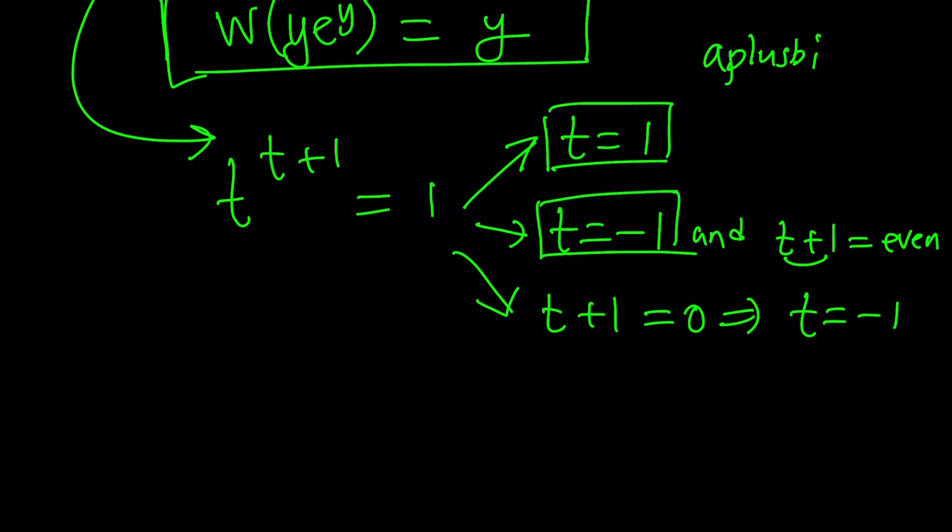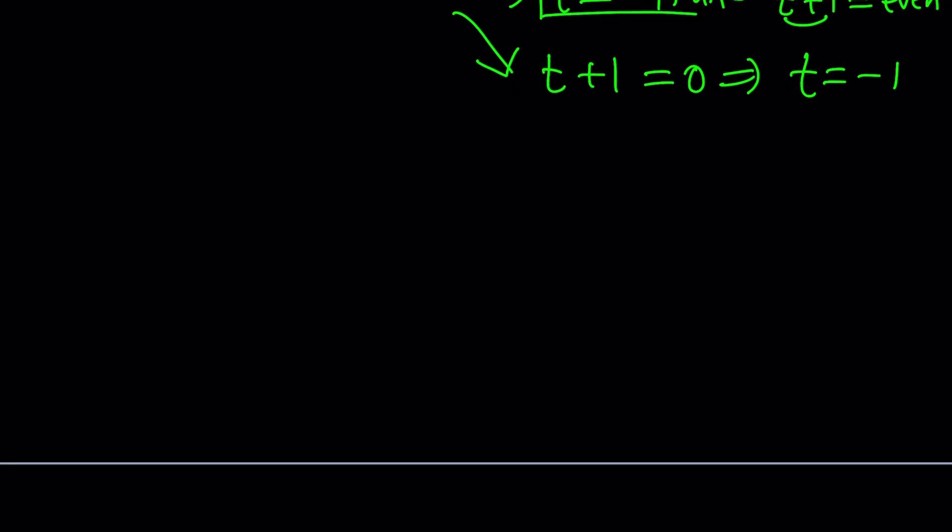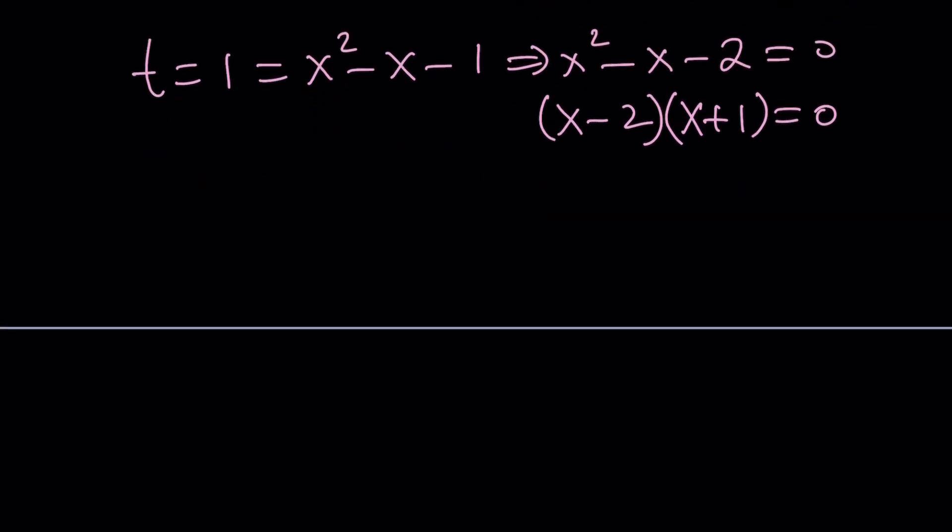So let's go ahead and use these values. If t is equal to 1, what is t? x squared minus x minus 1. Remember, that's the base. And then from here we get x squared minus x minus 1 minus 1 minus 2 equals 0. Hey, this is factorable. Nice. You should be familiar with this if you've done a little algebra. And from here, x equals 2 and x equals negative 1. And we got those solutions. Nice.